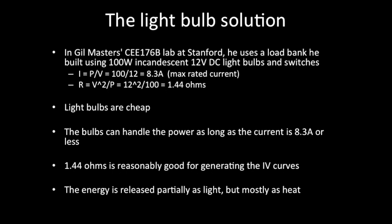One solution is to use light bulbs. In Gil's class at Stanford, the lab uses a load bank built from 100-watt incandescent 12-volt DC light bulbs and switches. The current they can handle is I = P/V, so 100 watts over 12 volts equals 8.3 amps — pretty good. The resistance of each one is V²/P, which is 12² over 100, giving 1.44 ohms, which is also good for graph resolution. Light bulbs are cheap, can handle the power as long as current is 8.3 amps or less, and the energy is released as light and mostly heat, which light bulbs are designed for.